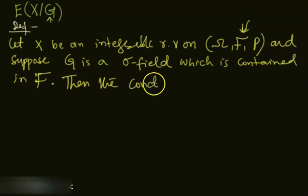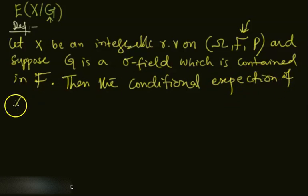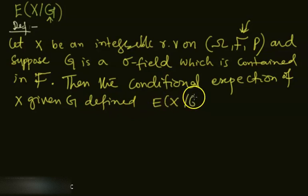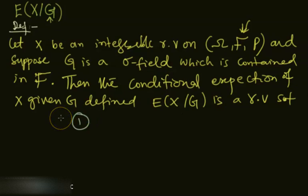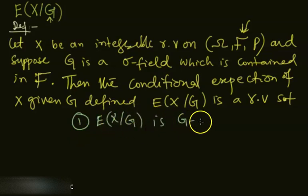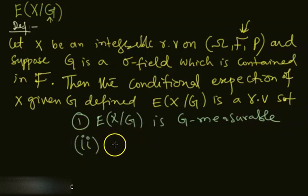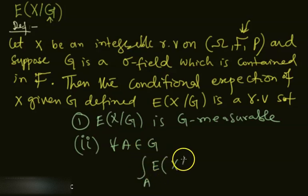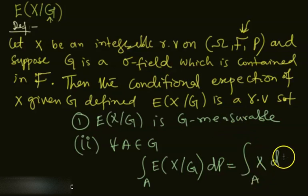The conditional expectation of X given G is defined as a random variable satisfying two conditions. Number one: E[X|G] is G-measurable. Number two: for every A in G, the integral of E[X|G] over A with respect to P equals the integral of X over A with respect to P.